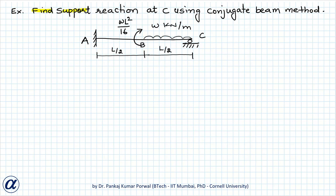In this question we need to find the support reaction at C using the conjugate beam method. We are given a propped cantilever beam with a fixed support at A and a roller support at C. At A we have three unknown reactions — two forces and one moment — and at C we have only one vertical reaction force. Total unknown reactions are four, and with three equilibrium equations, the degree of static indeterminacy is one.